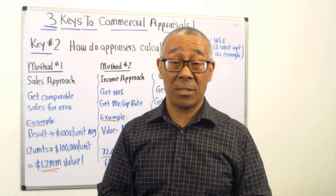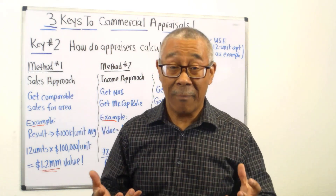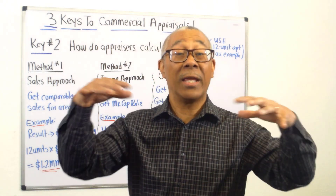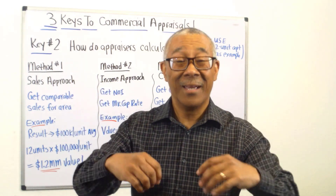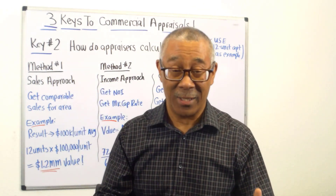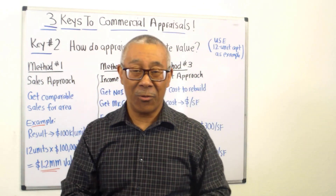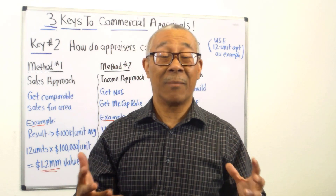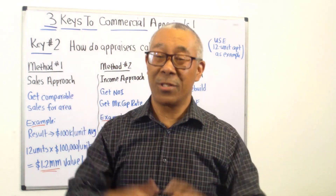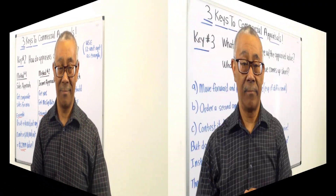Method one is the sales approach, method two is the income approach, and method three is the cost approach. This is how it works — it's not that complicated. There's just a lot going into it to calculate those numbers accurately. Let's go to key number three, which rarely anyone talks about.